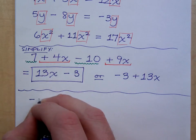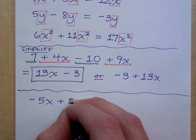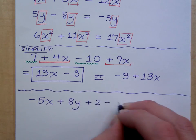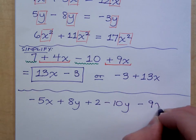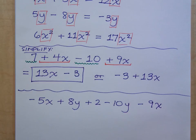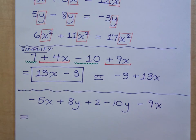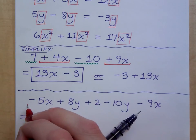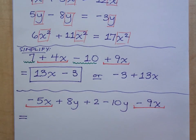If I have negative 5x plus 8y plus 2 minus 10y minus 9x, combine like terms. Please understand that as this problem stands right now, there is nothing that you need to take care of first. Sometimes the problems will require you to have some multiplication that you have to do first, but there's nothing going on here. I've just thrown out a bunch of terms and it's your job to rearrange them to be like terms, put them together. What do you see that you can put together? I've got a negative 5x and a negative 9x, and what is all of that?